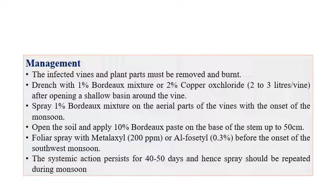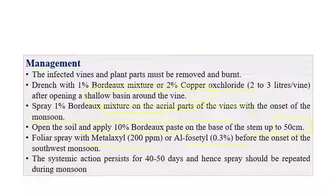For management, infected vines must be removed and burned. Soil drenching with 1% Bordeaux mixture or 2% copper oxychloride is required. Spraying Bordeaux mixture on aerial parts before the onset of monsoon, as well as soil application of 10% Bordeaux paste at the base of the stem up to 50 centimeters, is essential.